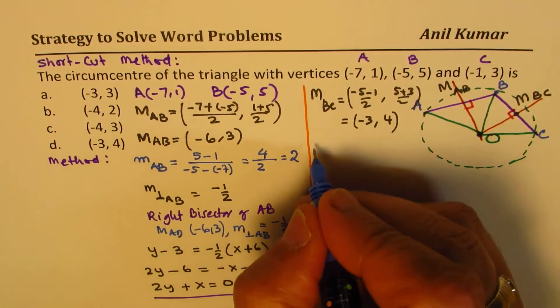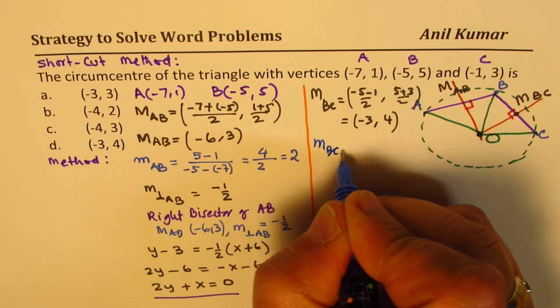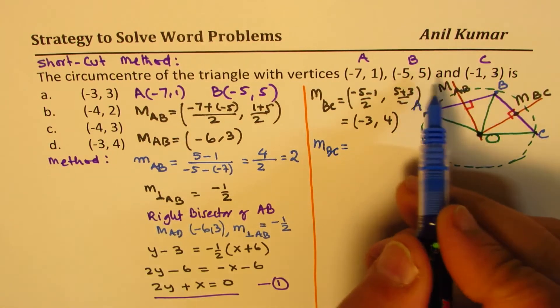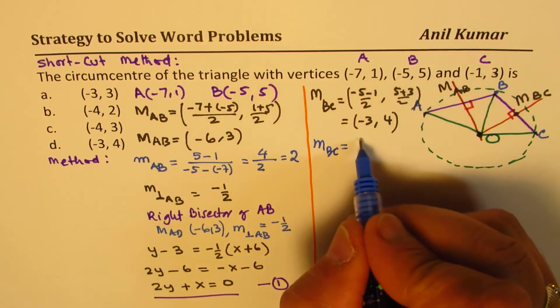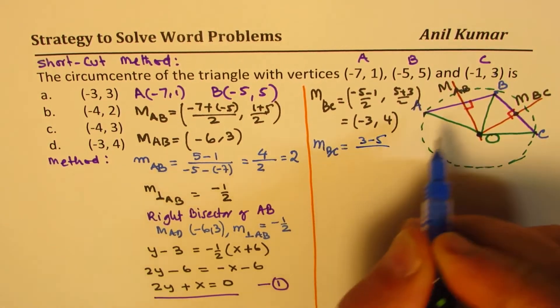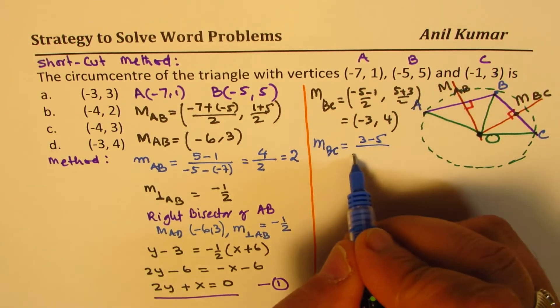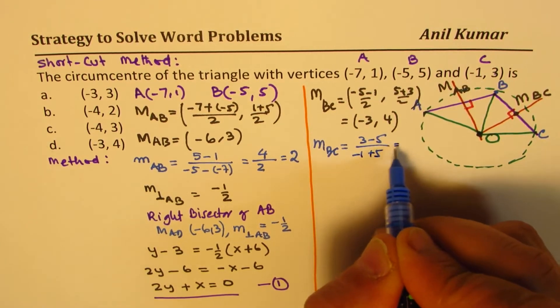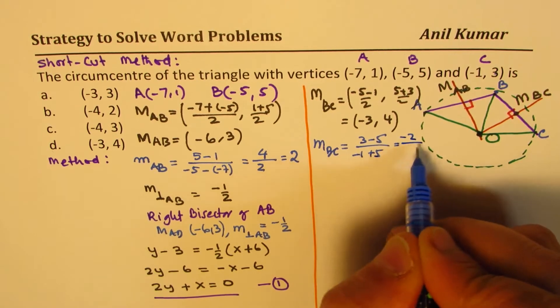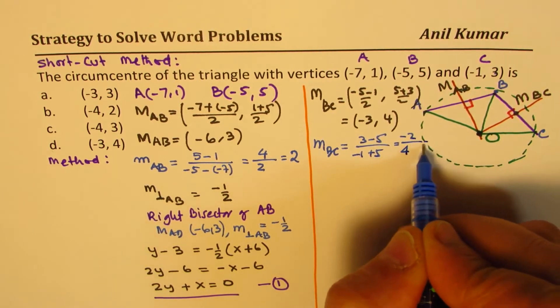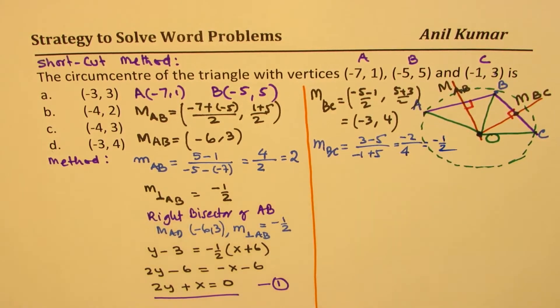Let's find the slope BC. y values, 3 minus 5. x values difference, -1 plus 5. So that gives you -2 here and 4 or -1/2.